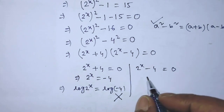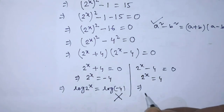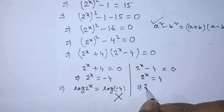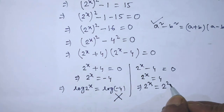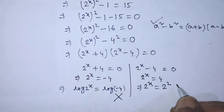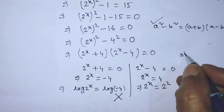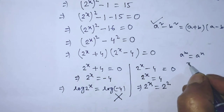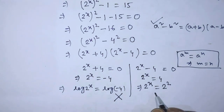From the second equation, 2 to the power x is equal to 4. We rewrite the right hand side as 2 to the power 2. Since the bases are the same on both sides, we apply the formula: if a to the power m equals a to the power n, then m equals n. According to this formula, x is equal to 2.